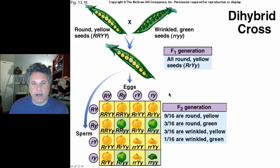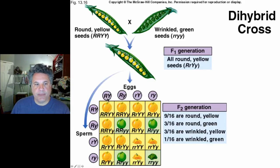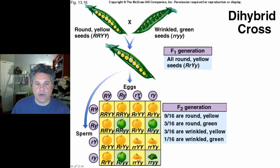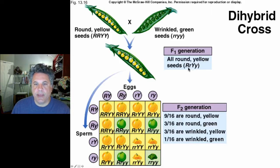What Mendel observed was that in female gametes, if a gamete acquired a large R allele, it could be accompanied by a large Y or a small y allele in equal proportions. Likewise, if an egg acquired a small r allele, it could also acquire either a large Y or a small y allele — meaning the assortment of alleles governing different character traits is completely independent.